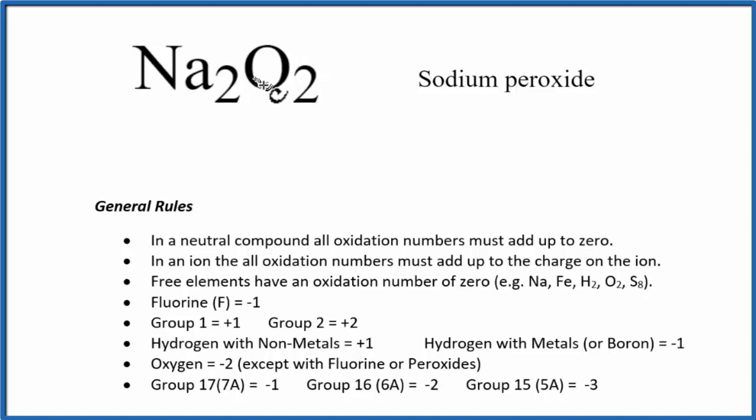If we look at Na2O2, it's a neutral compound. It's neutral because there's no plus or minus up here. So all the oxidation numbers, they're going to add up to zero, and we'll need that to find the oxidation numbers for sodium peroxide.